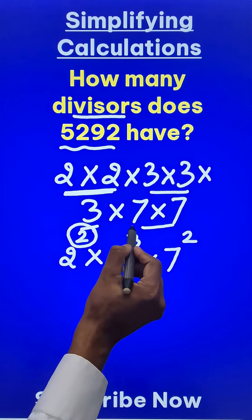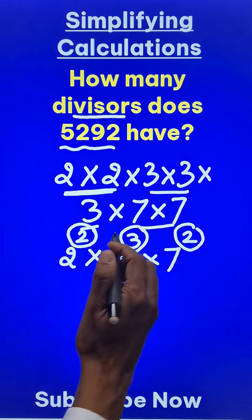Just increase the exponents, all the 3 exponents which we obtained just now by 1. So, 2 becomes 3, 3 becomes 4 and 2 becomes 3.